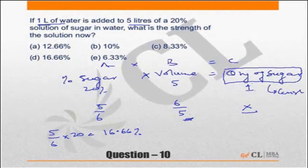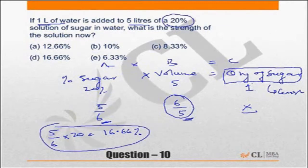The volume becomes 6 by 5 times, so the percentage of sugar should become 5 by 6 times. The original percentage was 20%, so the new percentage is 5 by 6 of 20, which is 16.66%. This is simply an application of ratios.